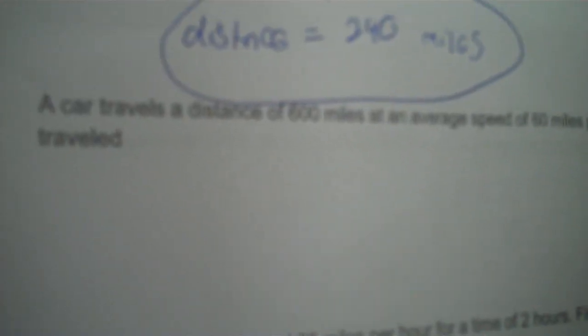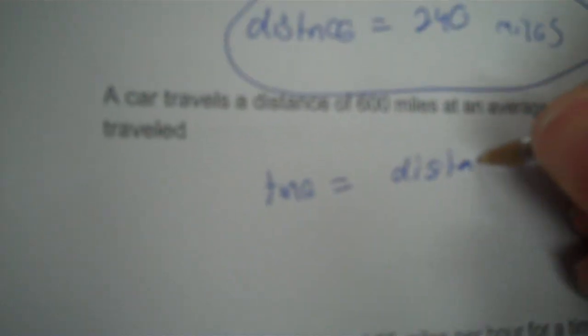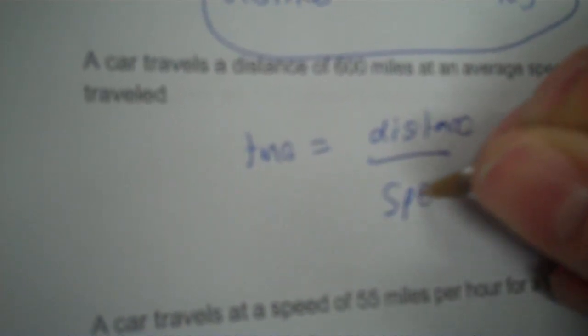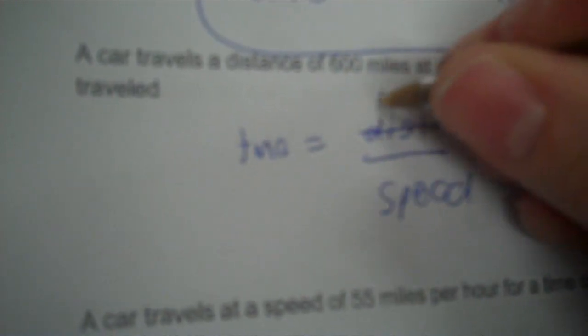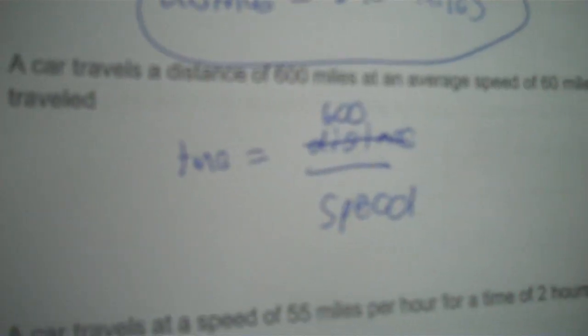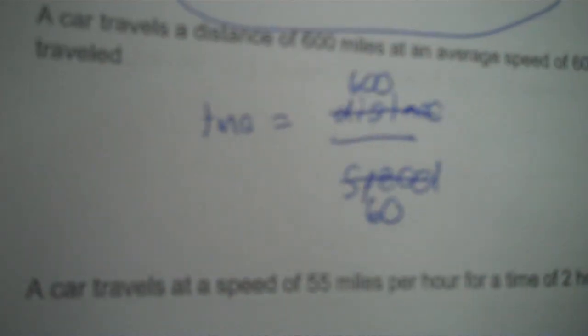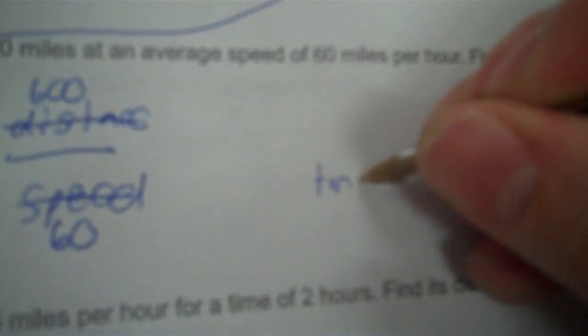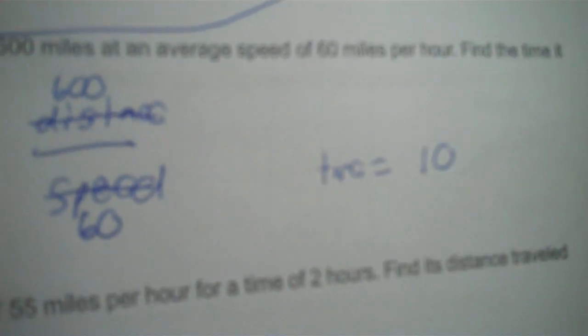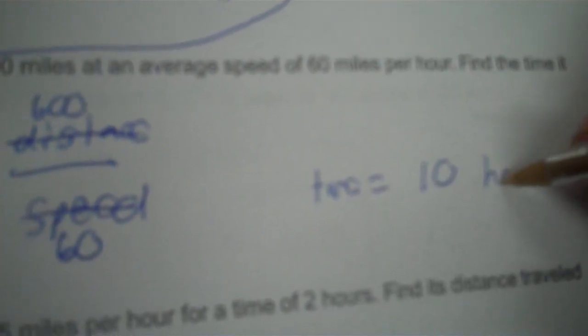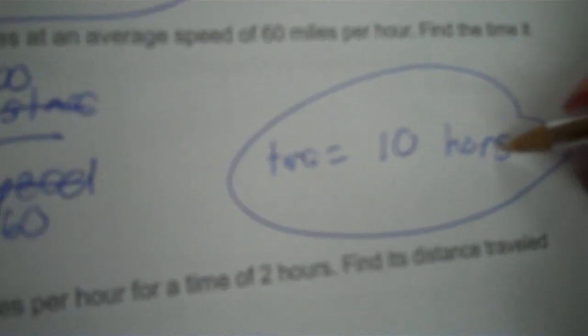A car travels a distance of 600 miles at an average speed of 60 miles per hour — find the time it traveled. Time equals distance divided by speed. The distance is 600 miles and the speed is 60 miles per hour. 600 divided by 60 is 10. The label on time is just hours — 10 hours.